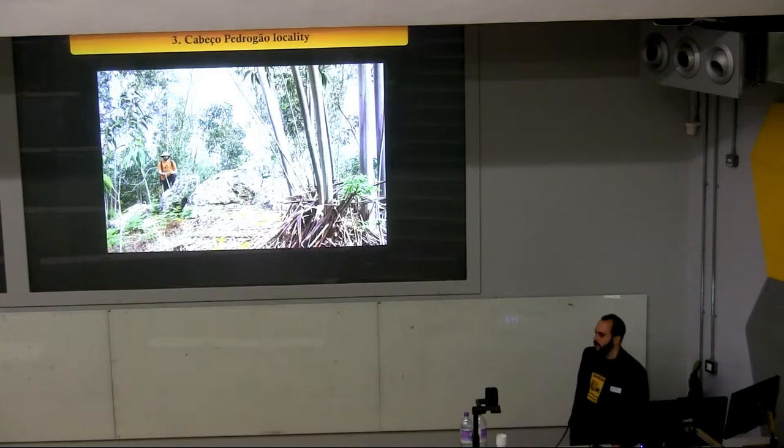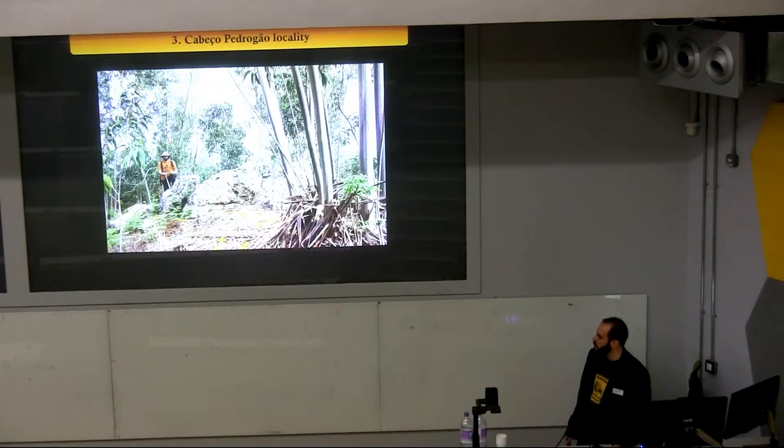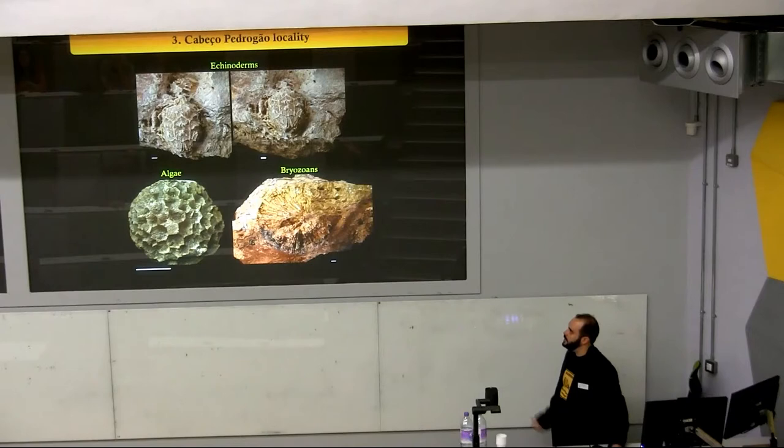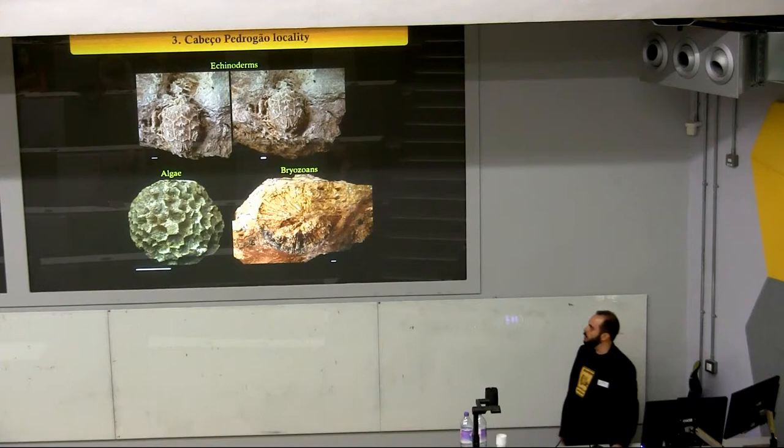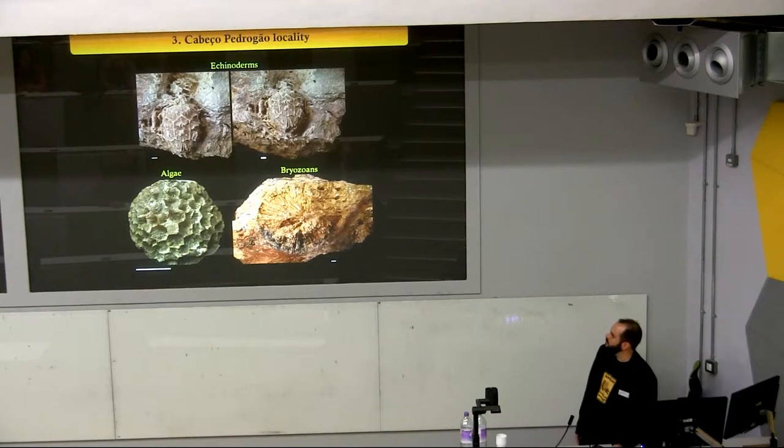In this case we were lucky and found a really good outcrop in the Cabezo Pedrogon Hill, in which we can observe the silicified levels of the uppermost part of the Porto de Santana Formation. In this locality it is fairly common to find some silicified fossils like echinoderms, algae, and bryozoans. But the most common mode of preservation in this locality is to find the fossils as internal and external molds.